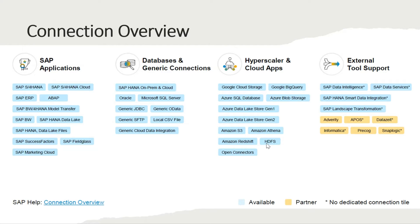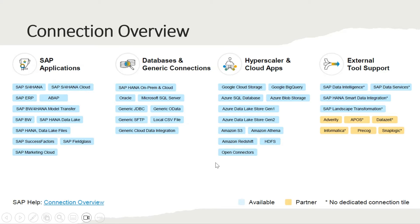A wide variety of sources are supported, both from the cloud and on-premise. If anything is not available as a standard connector in SAP Data Sphere, you can also use API or OData to connect to your source and replicate your data to SAP Data Sphere.